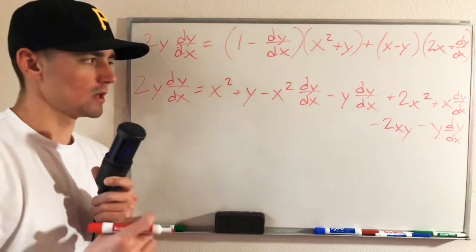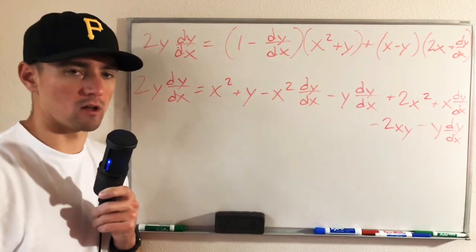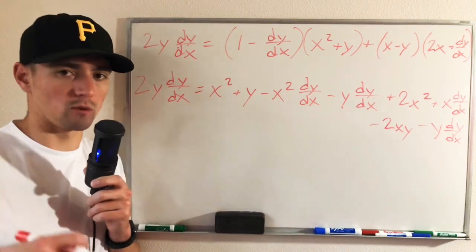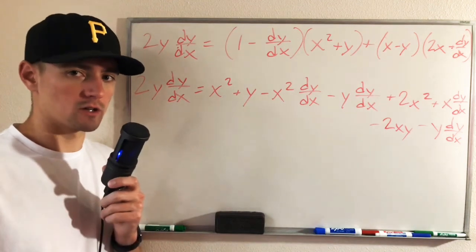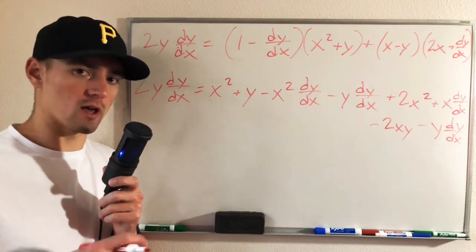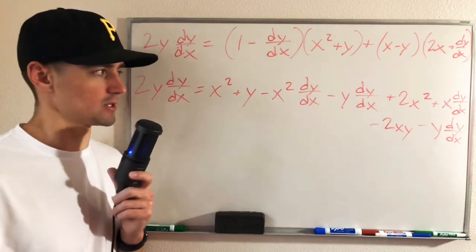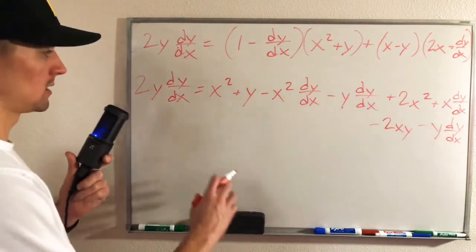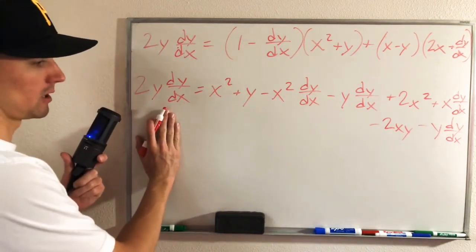So now at this point it's going to look a lot like a lot of other implicit differentiation problems. We want to get all of our dy/dx terms on one side of our equation and our non-dy/dx terms on the other side. So since we already have a dy/dx term over here, we will add or subtract any term that has a dy/dx in it from the right side over to the left side of our equation.